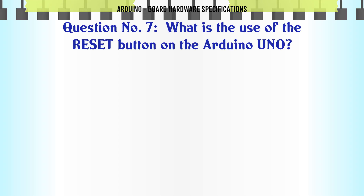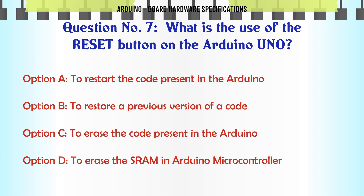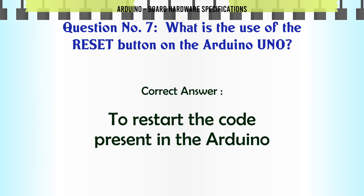What is the use of the reset button on the Arduino UNO? A: To restart the code present in the Arduino. B: To restore a previous version of a code. C: To erase the code present in the Arduino. D: To erase the SRAM in the Arduino microcontroller. The correct answer is: To restart the code present in the Arduino.